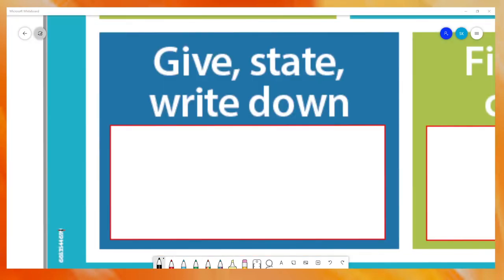Starting the bottom row of these keywords, we now move to a set of three: give, state, and write down. These all broadly mean the same thing and it means that little or no working or justification is required.